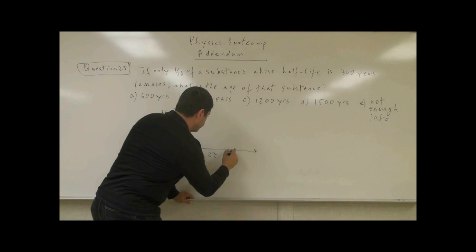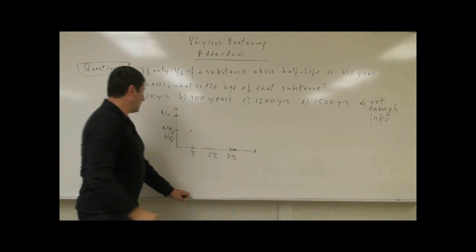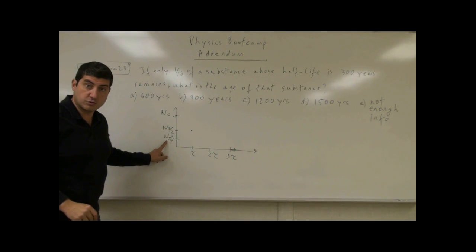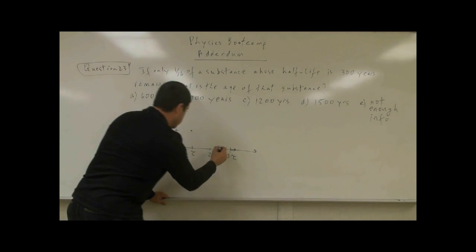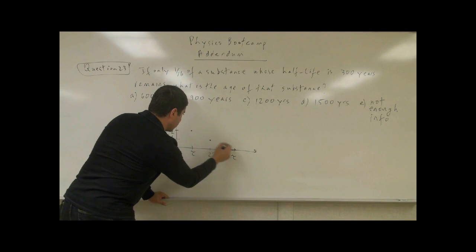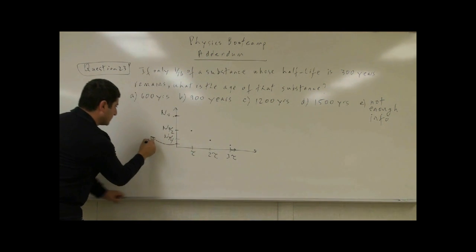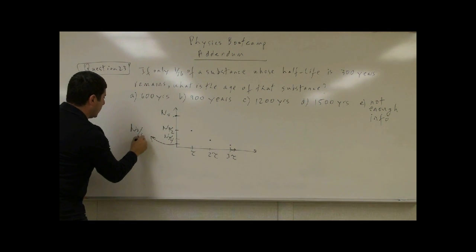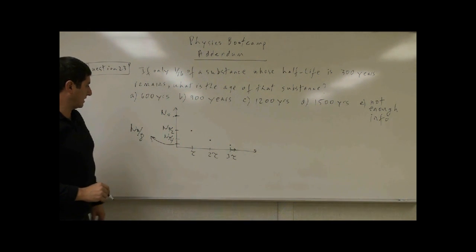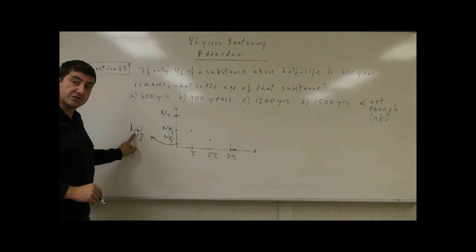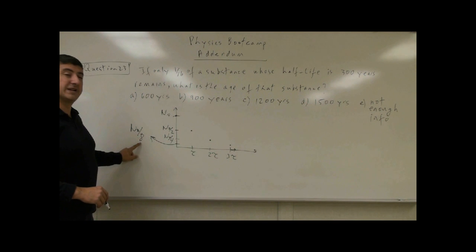After three half-lives, what's going to happen? Half of a quarter, which is an eighth, one-eighth. So we can actually make a plot here. One-eighth, that gives you over here, N0 over eight. So it's a number of particles, active nuclei, one-eighth of that.